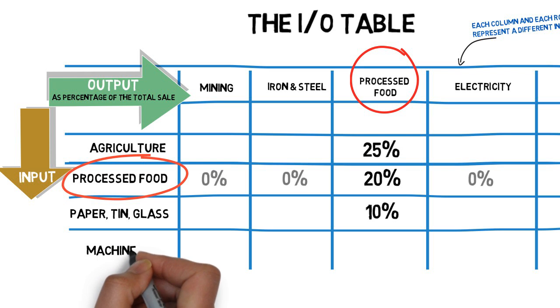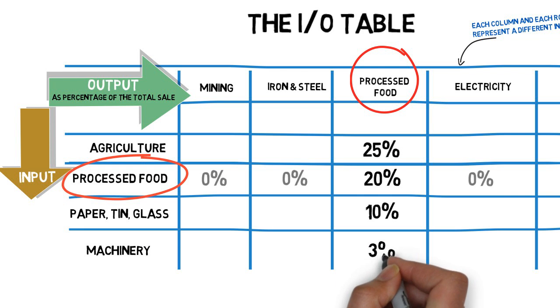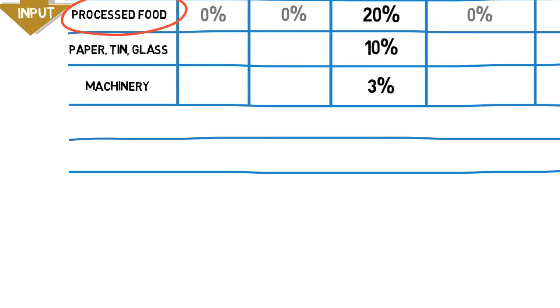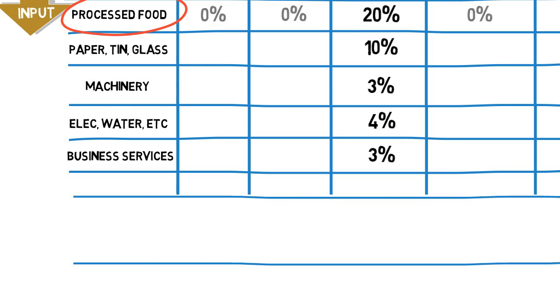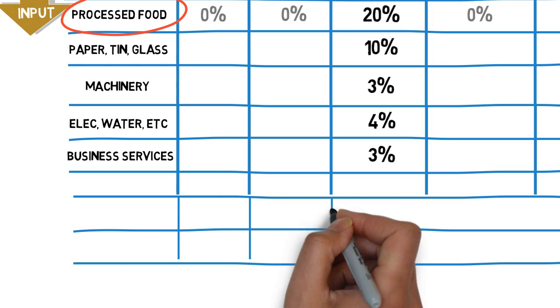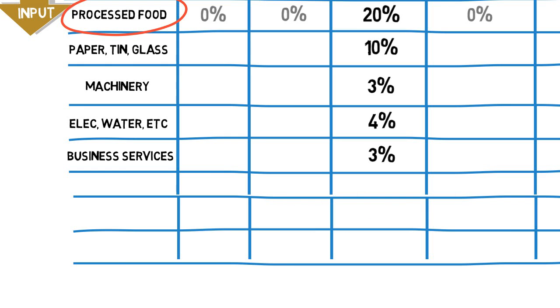And machines for mixing and making food, say another 3%. Then there's lots of little inputs like electricity, water, etc., maybe 4%. And business services, 3%. Then comes people again. This time not as purchasers of output, but as providers of inputs in the form of labor and capital. And paid as wages, say that's 15%. And profits, let's say that's 12%.